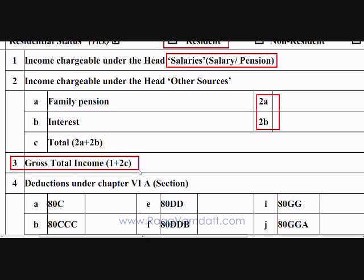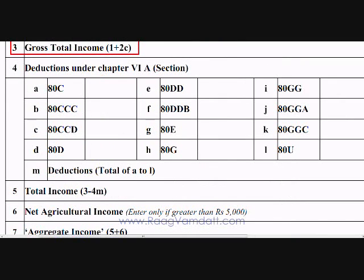Now we come to deductions — this is where you put the investments you have made to save tax. Section 80C is where the bulk of your investments would go, including investments like provident fund, public provident fund, equity linked savings schemes, etc. The maximum deduction you can claim under section 80C is Rs 1 lakh. In 80CCC, include any amount that you have invested in a pension fund. The maximum here is Rs 10,000 and this is counted towards the section 80C limit of Rs 1 lakh.